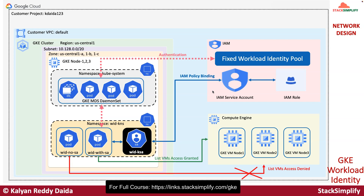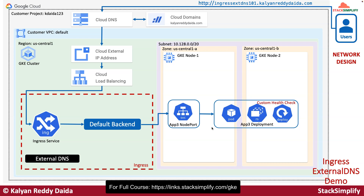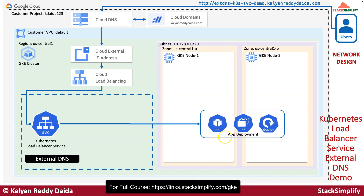Once we implement and understand the workload identity concept in detail, we will move on to GKE external DNS controller installation. Using workload identity, we have given the external DNS controller access to Cloud DNS, so from the respective external DNS controller deployment pods, we will be able to add and delete DNS records in Cloud DNS. This gives a perfect understanding of how workload identity works in Google Cloud in combination with GKE. After that, we will implement an ingress external DNS demo with ingress service and also an external DNS demo with a Kubernetes load balancer service.